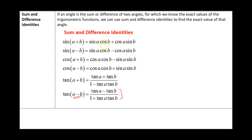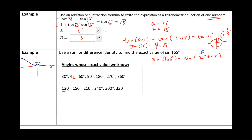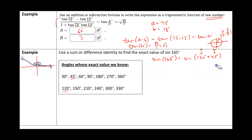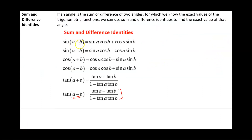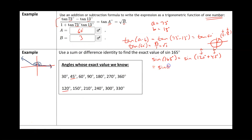This helps us because we know the exact value of sine of 120 and sine of 45, since they both have reference angles that are either 30, 60, or 45. Going back to the formula for sine of A plus B, we get sine A cosine B plus cosine A sine B. With A equal to 120 and B equal to 45, this equals sine of 120 times cosine of 45, plus cosine of 120 times sine of 45. Our objective is now to figure out sine of 120, cosine of 45, cosine of 120, and sine of 45.